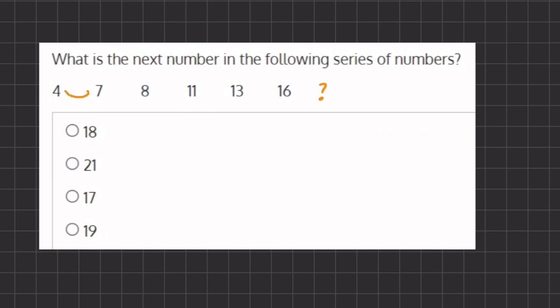Alright, so our first transition from 4 to 7 is adding 3. Our second transition is adding 1. Our third transition from 8 to 11 is adding 3. From 11 to 13 we are adding 2, and from 13 to 16 we are adding 3.